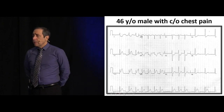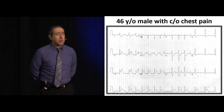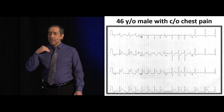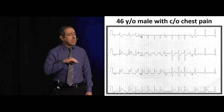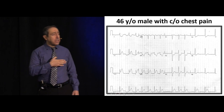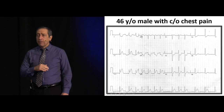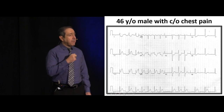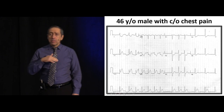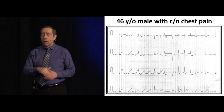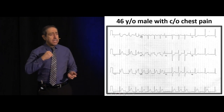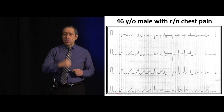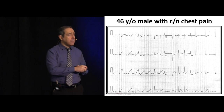Inferior myocardial infarctions occur from right coronary artery occlusion. The right coronary artery comes out, bifurcates, gives one branch to the right ventricle, then wraps around the back of the heart and supplies the inferior part of the left ventricle. In about 80% of the population, a branch called the posterior descending artery comes off the right coronary artery — the branch that goes behind the heart — and continues to supply the inferior part of the left ventricle.